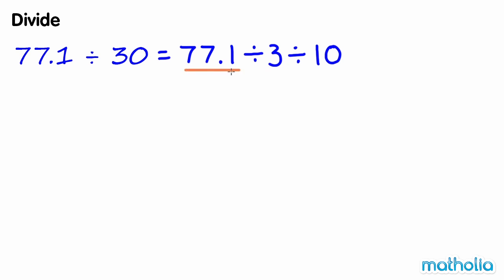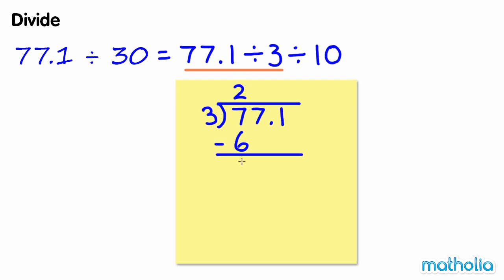First, let's find 77.1 divided by 3. 77.1 divided by 3 equals 25.7.